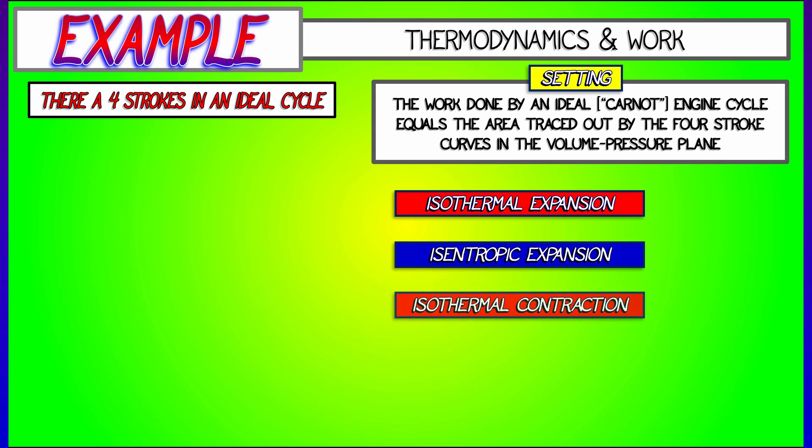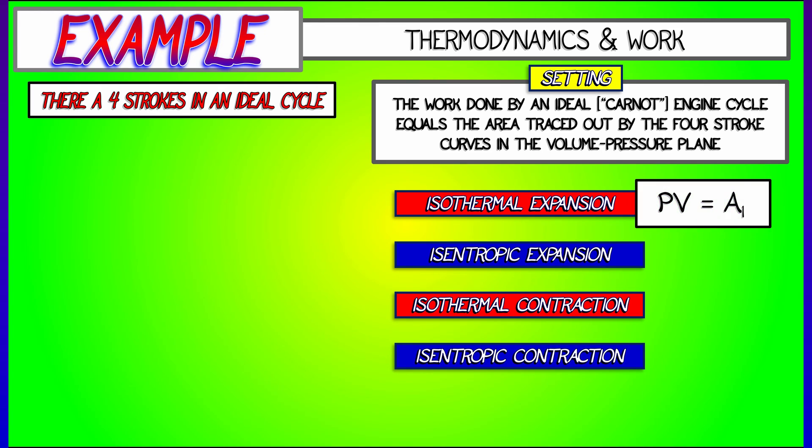Now, I've got these four different strokes, and they are defined in terms of pressure and volume as follows. Isothermal expansion is P times V is a constant, let's say A1. Next, isentropic expansion is P times V to the gamma equals a constant, B1.